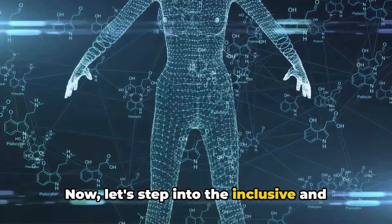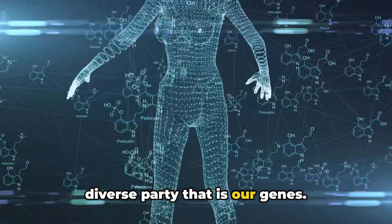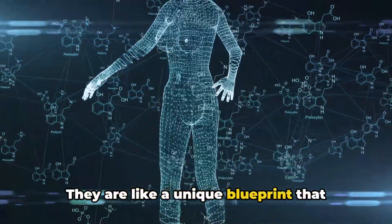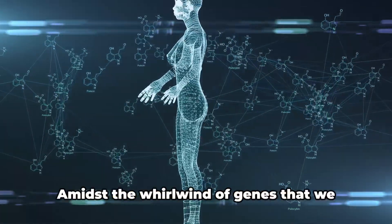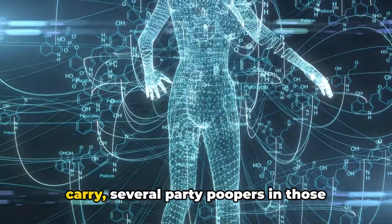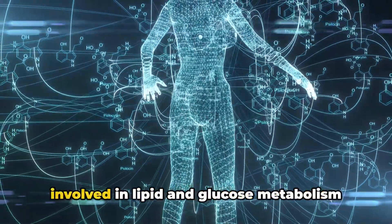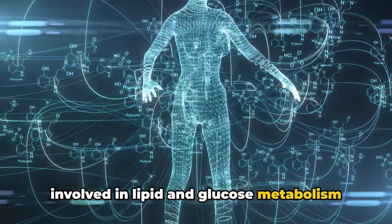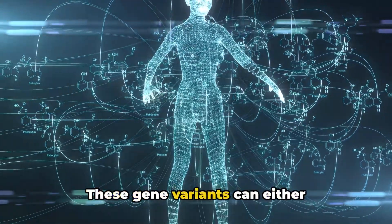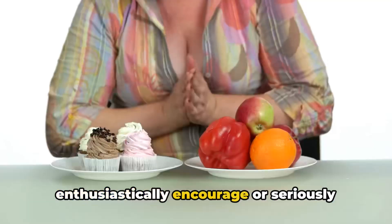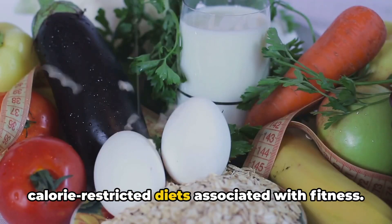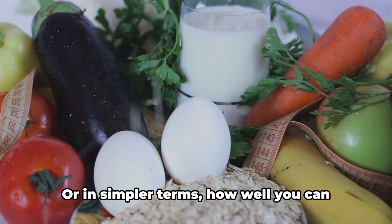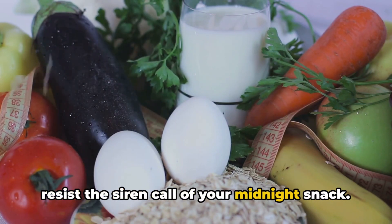Now let's step into the inclusive and diverse party that is our genes. They are like a unique blueprint that guides how our bodies function or in some cases malfunction. Amidst the whirlwind of genes that we carry, several party poopers in those involved in lipid and glucose metabolism have been studied. These gene variants can either enthusiastically encourage or seriously dampen how a person responds to calorie-restricted diets associated with fitness, or in simpler terms, how well you can resist the siren call of your midnight snack.